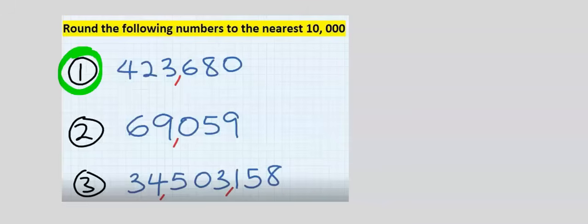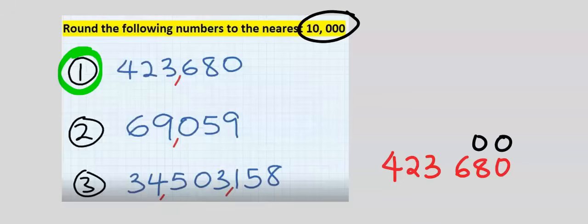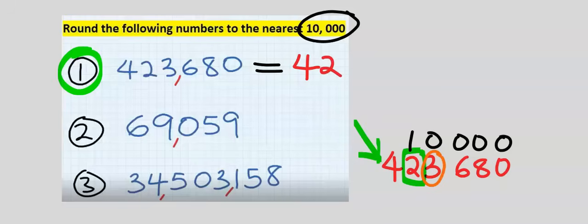Consider the first question. To the nearest ten thousand is 10,000, which falls on 2. Two will either be modified or stay the same. Four is not affected, hence four will remain. But three cannot modify two, hence two will remain. Three, six, eight, and zero will all acquire zeros, and this is the nearest ten thousand.